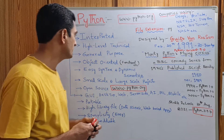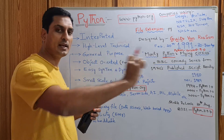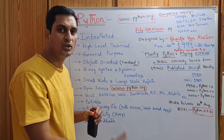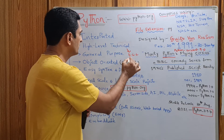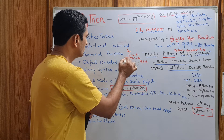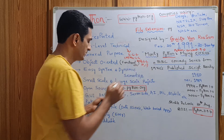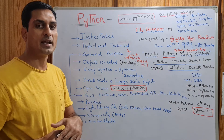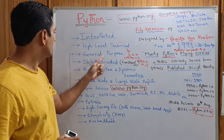Interpreted programming languages like Java and Python translate code line by line into low-level machine language — binary, which means zeros and ones. So the interpreter converts the high-level code line by line so the machine can understand the program and produce the output.